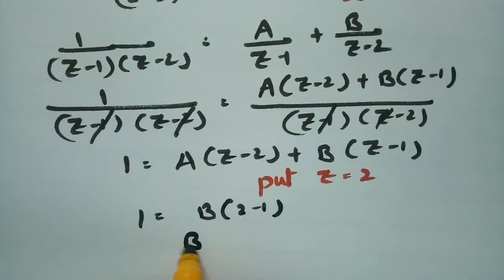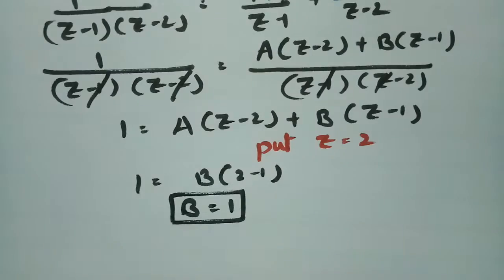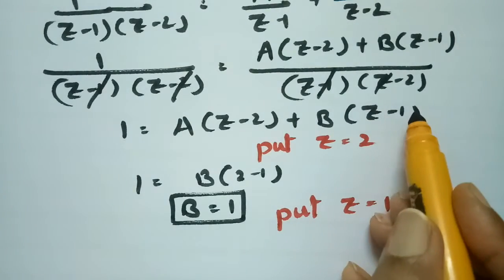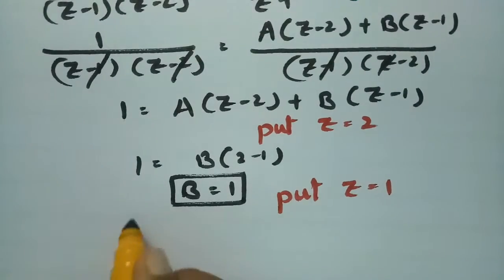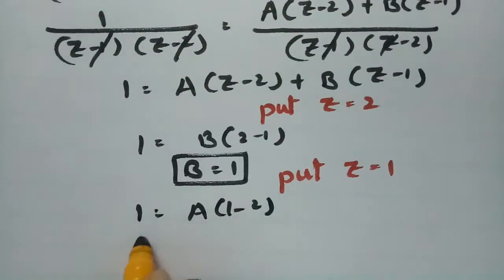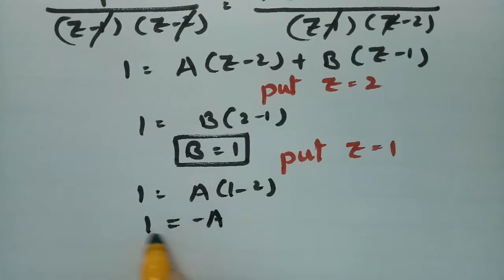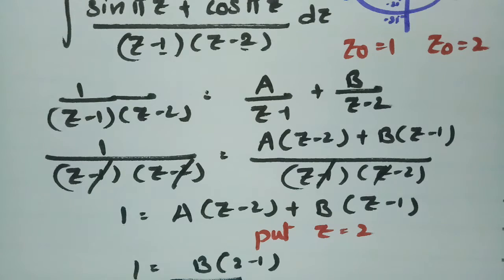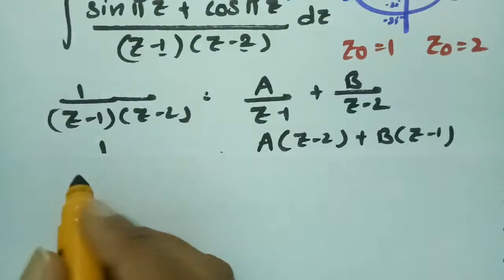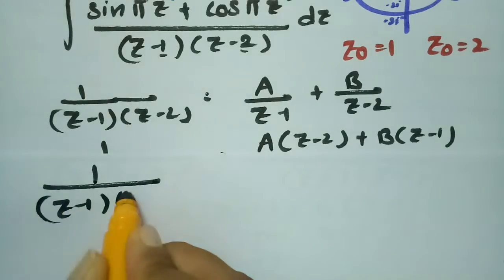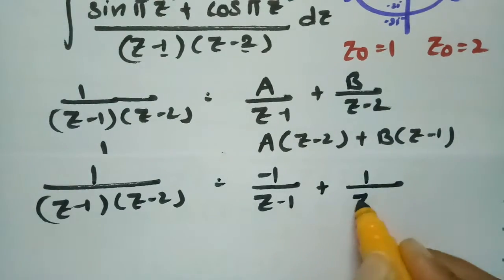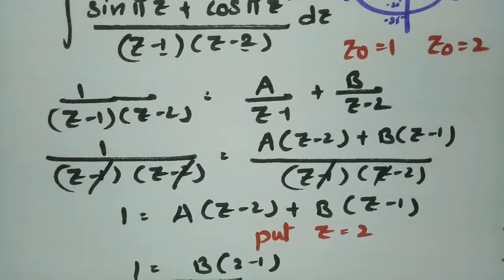Next, substituting z = 1 gives 1 = A(1−2), so A = −1. Substituting A = −1 and B = +1, the partial fraction decomposition is: 1/[(z−1)(z−2)] = −1/(z−1) + 1/(z−2).